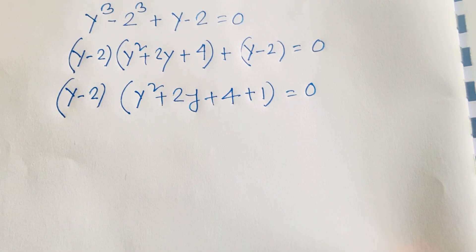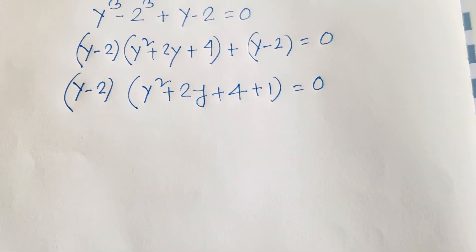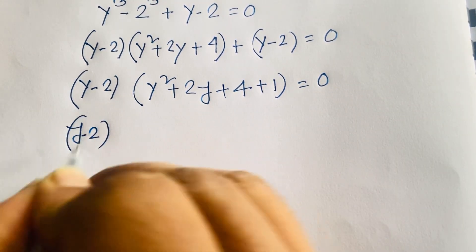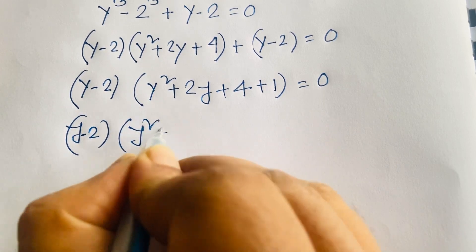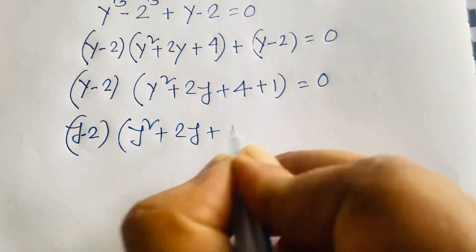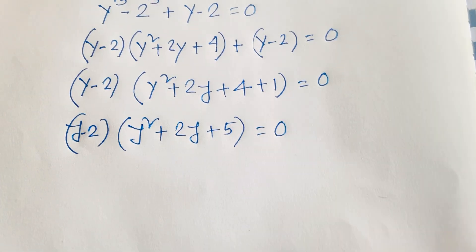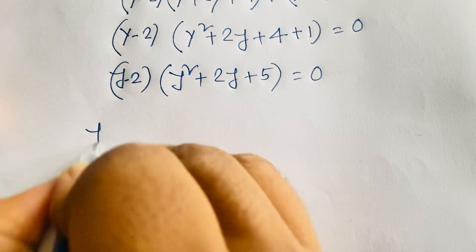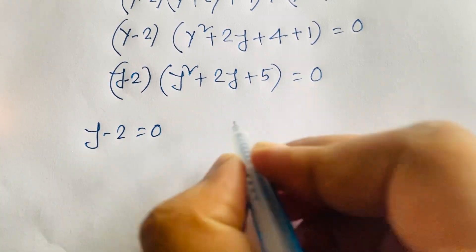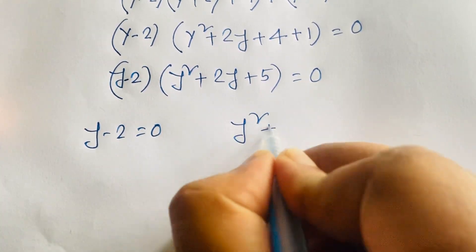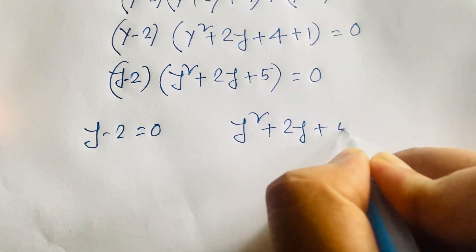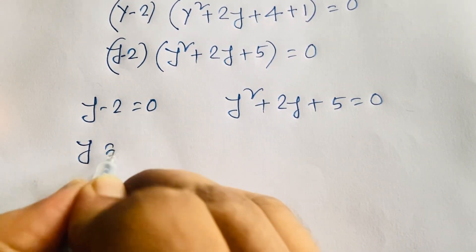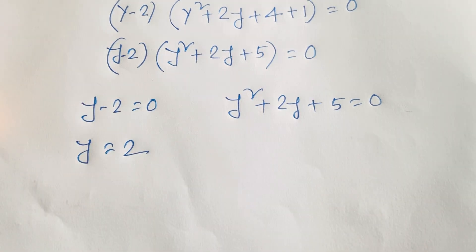We now have two cases. Case 1: y minus 2 equals 0, which gives y equals 2. Case 2: y² plus 2y plus 5 equals 0, which is a quadratic equation with a equals 1, b equals 2, and c equals 5.